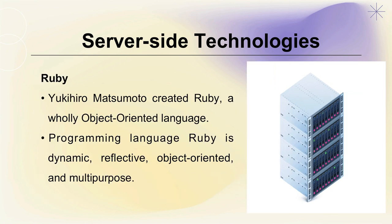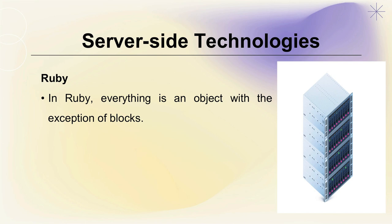The next server-side technology is Ruby, created by Yukihiro Matsumoto as a wholly object-oriented language. Ruby is a dynamic, reflective, object-oriented, and multipurpose programming language. In Ruby, everything is an object with the exception of blocks. The main goal of its development was to make Ruby function as a logical barrier between human programmers and the underlying computer infrastructure.